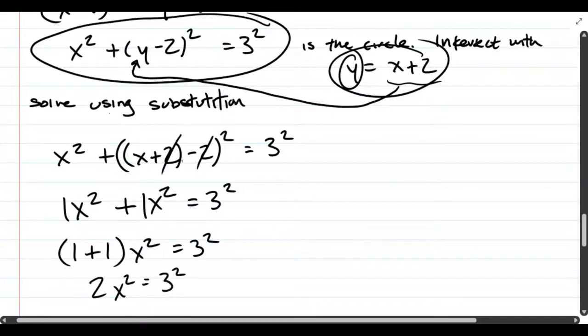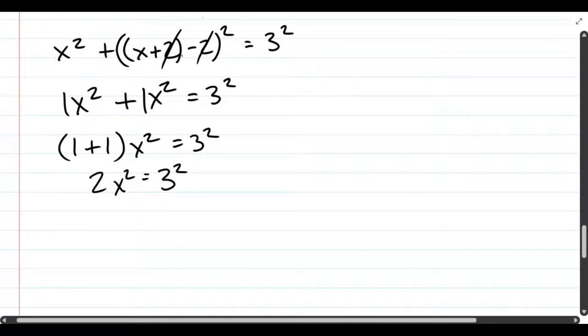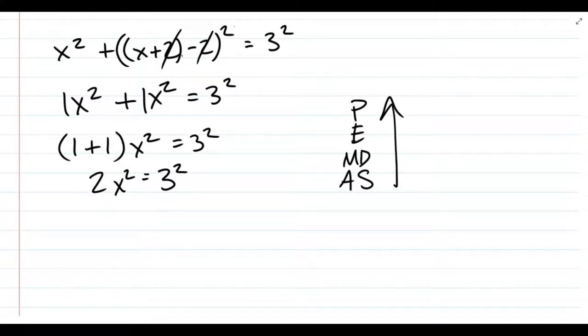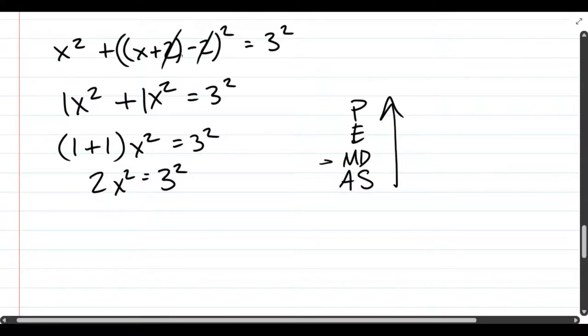2x² = 3². Of course, 3² is 9, but I'm going to leave it as 3²—you'll see why in a few minutes. When you're doing algebra, you go up the PEMDAS ladder. We don't have any more addition or subtraction, but we do have multiplication and division to take care of before exponents. So I'm going to un-multiply by 2, or multiply by 1/2. You can also divide by 2. So x² = 3²/2.